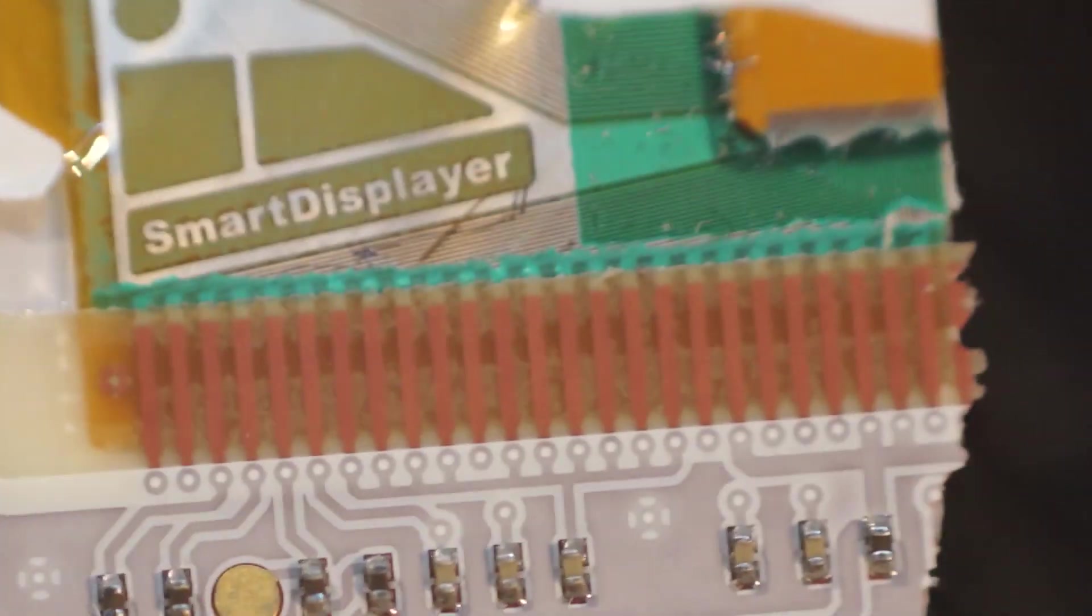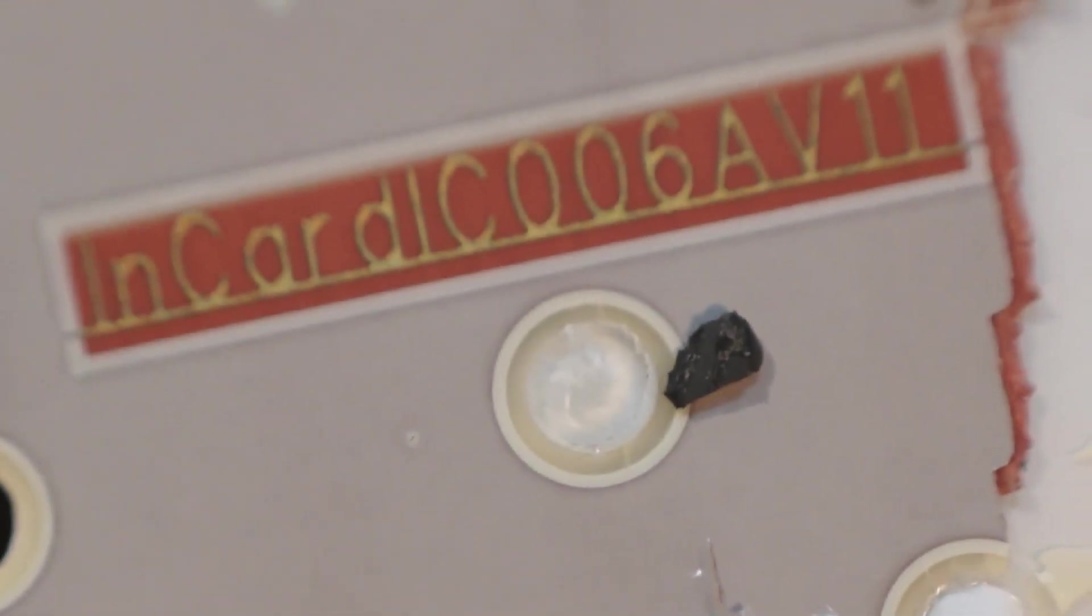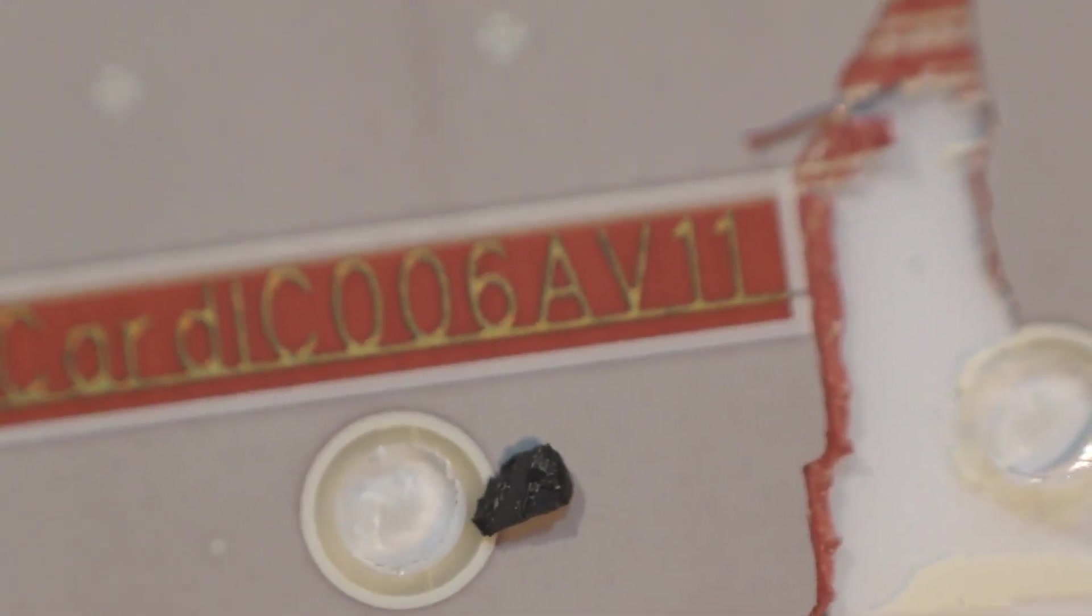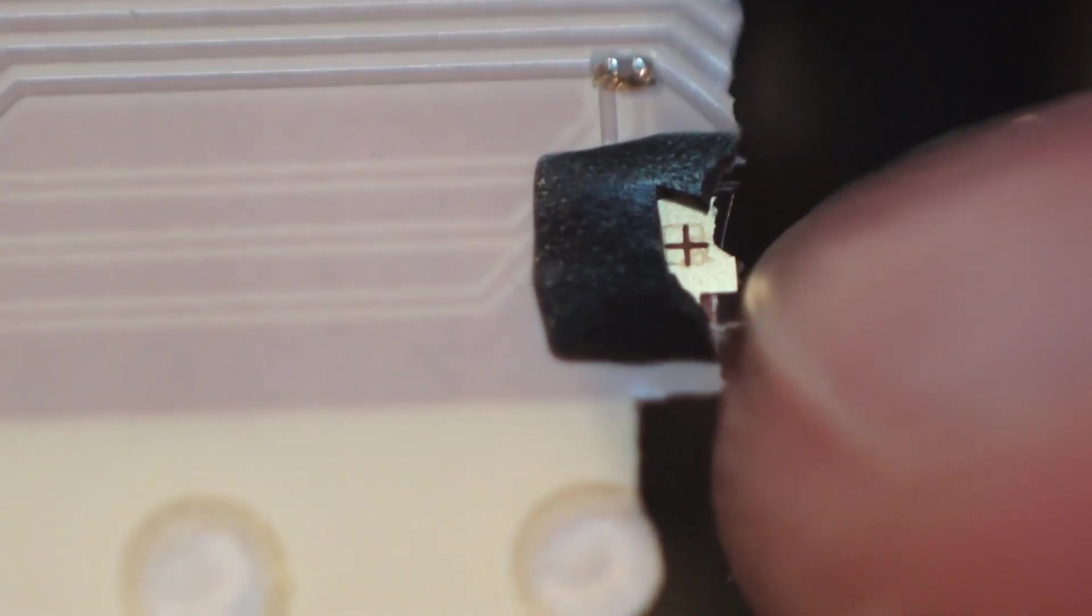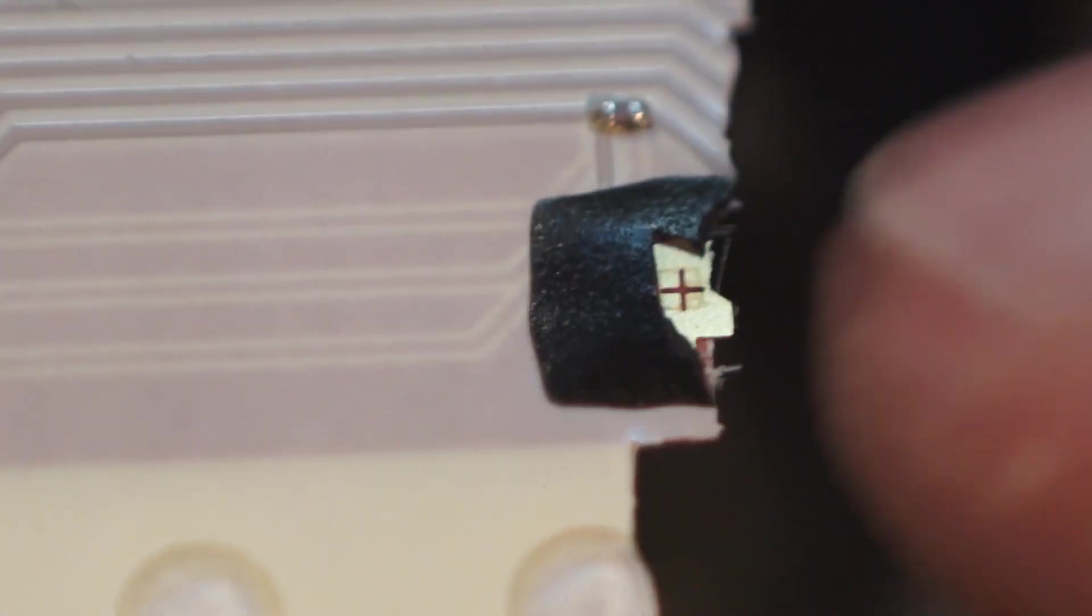Here's the bottom side of the display board. You can see In Card C006 AV11. And over here is the presumably the communication loop and that's where that ASIC was, whatever that device was.